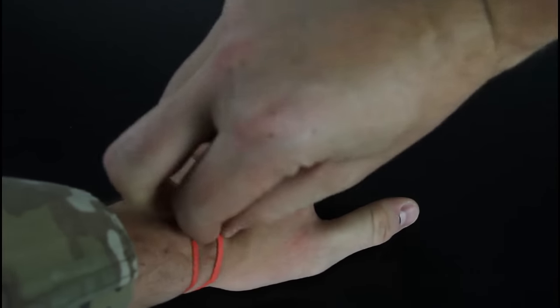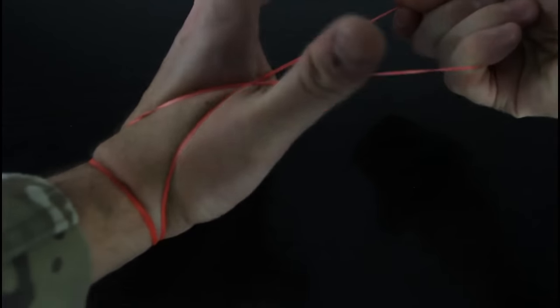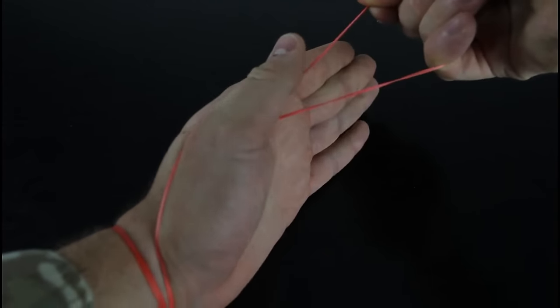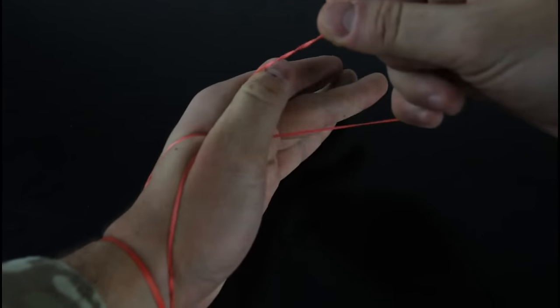Alright, once again gonna grab a rubber band, twist it. You see my hand is this way now. Lock it, then hold this one, put it right back on your finger and twist it again.